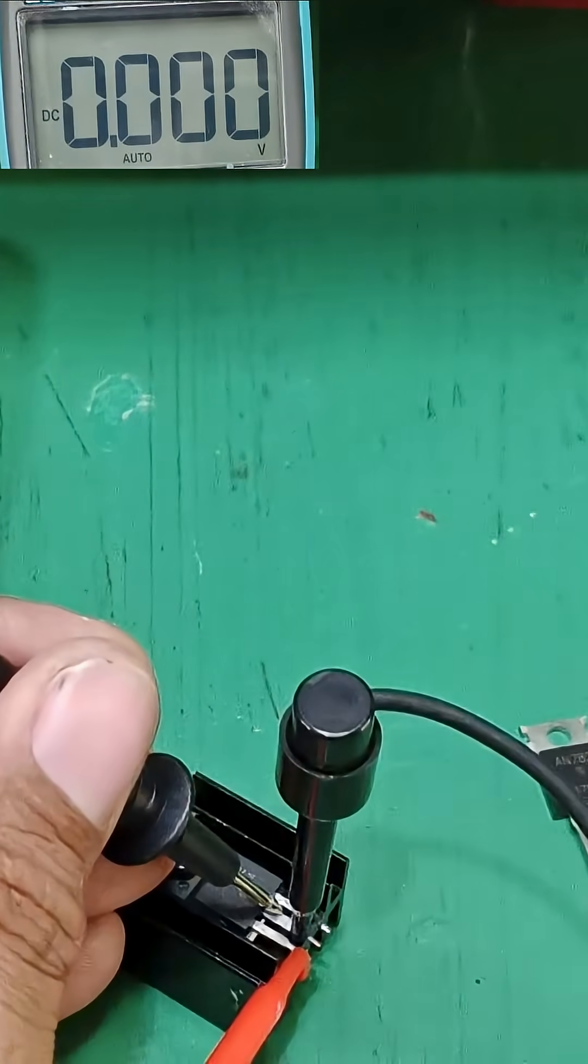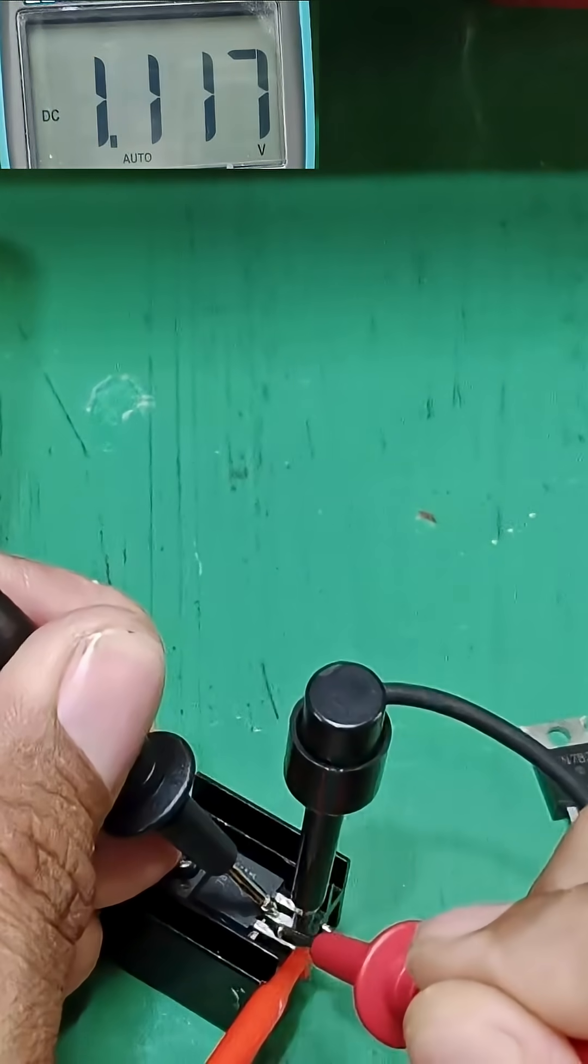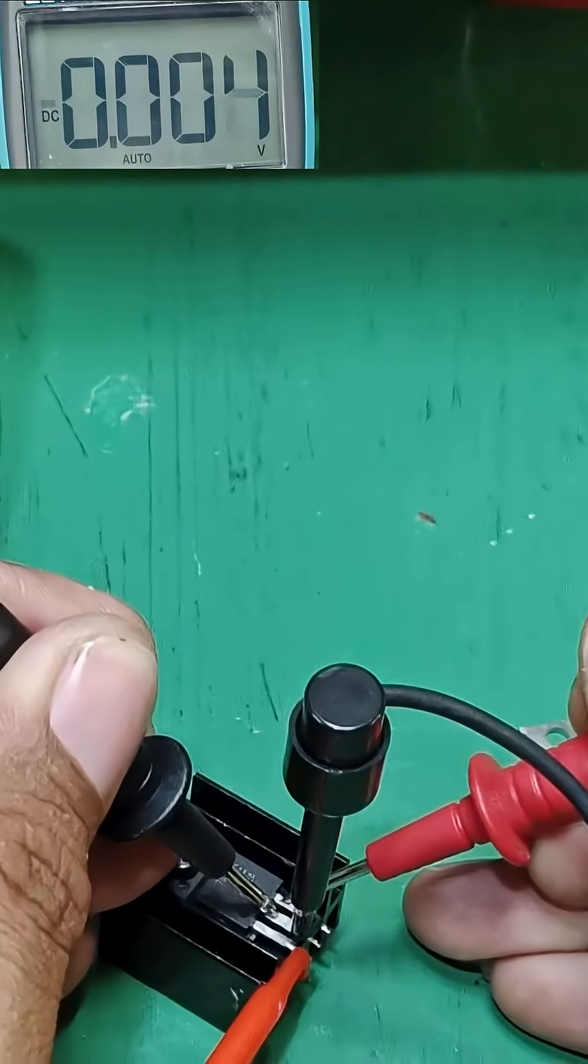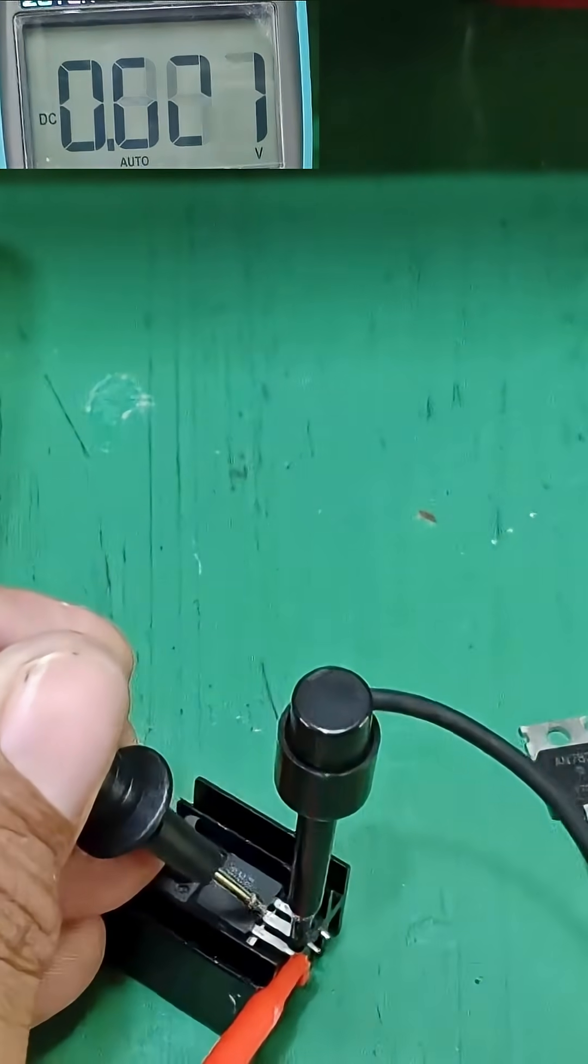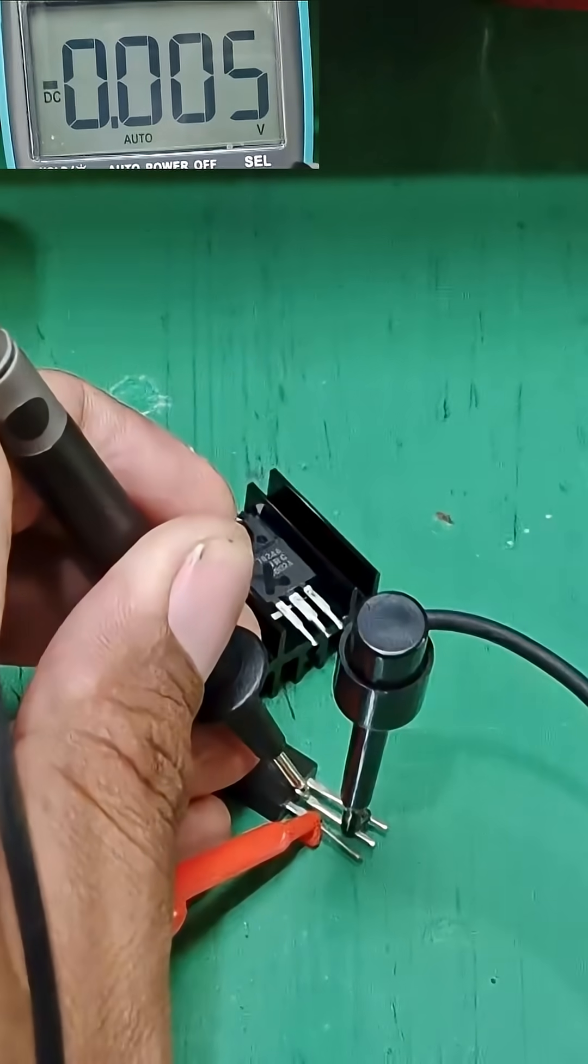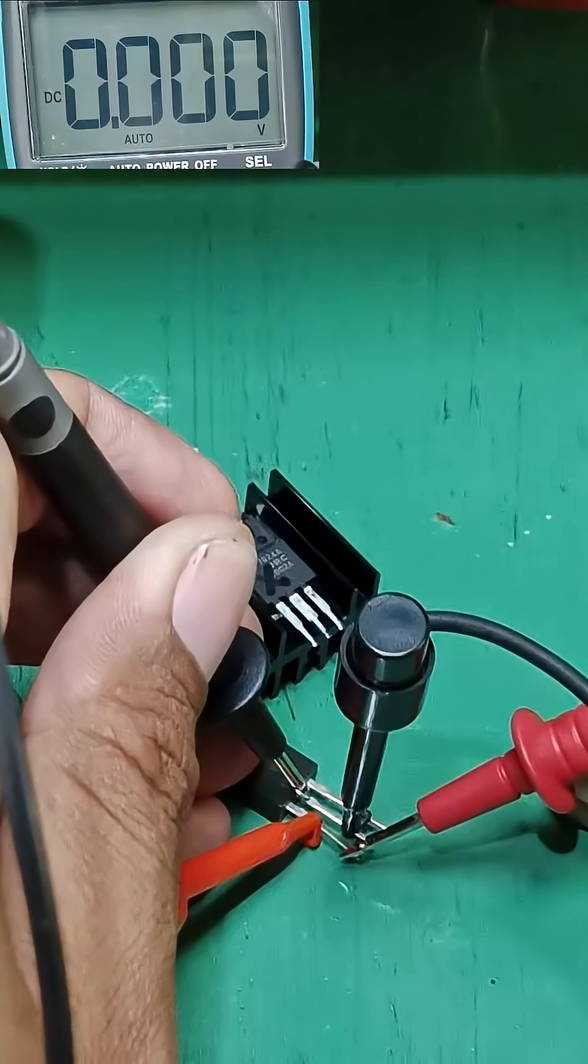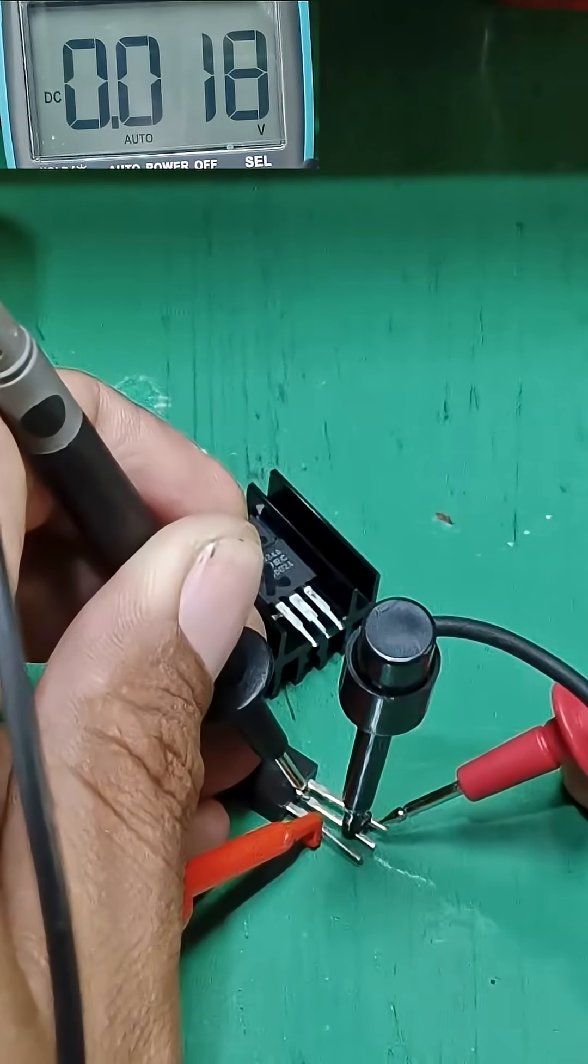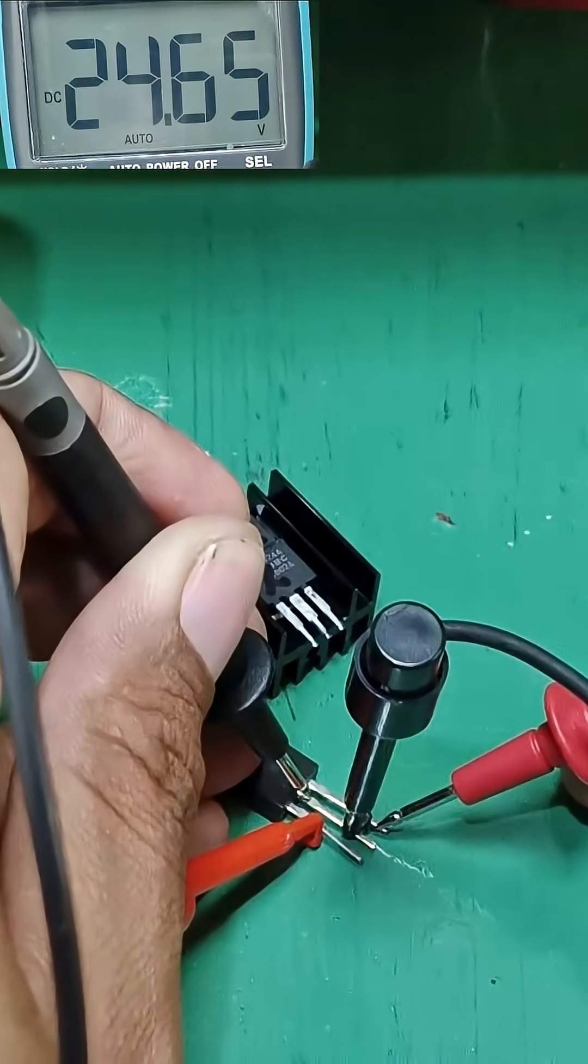Now let's start with the busted component or the suspected component. Input voltage is 36, output zero - this is busted 7824. Now for our new component: input 35 volts, output 24 volts.